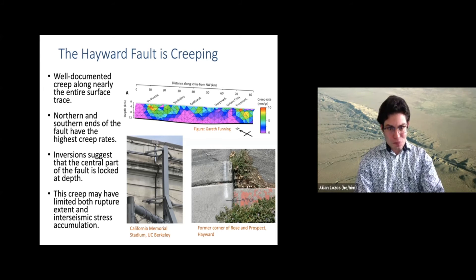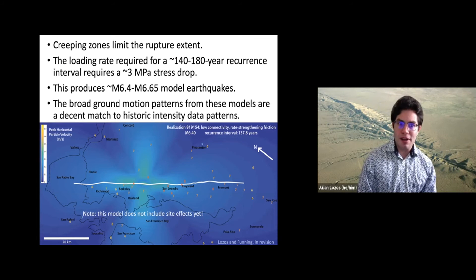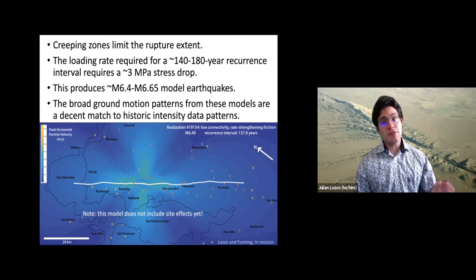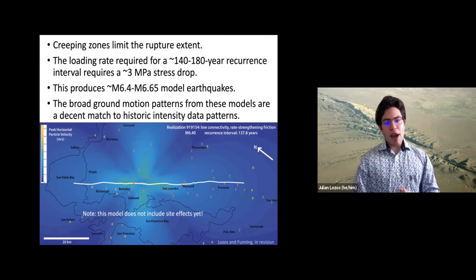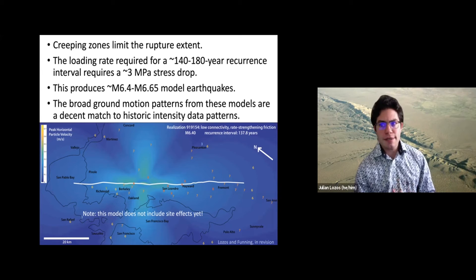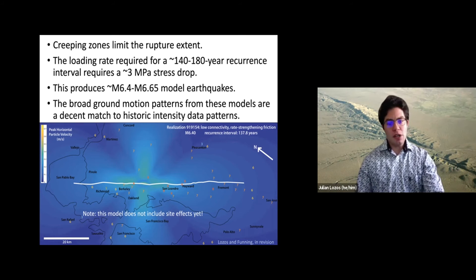The creeping zones limit the rupture extent. The loading rate requires a pretty low stress drop of about 3 MPa. In my models, it produces earthquakes ranging from magnitude 6.4 to 6.65. So my thought was: if this is the kind of earthquake I'm getting that matches the creep distribution and the recurrence interval, does this look like 1868? I thought I would plot the ground motions from my models to see if they match the historic accounts.